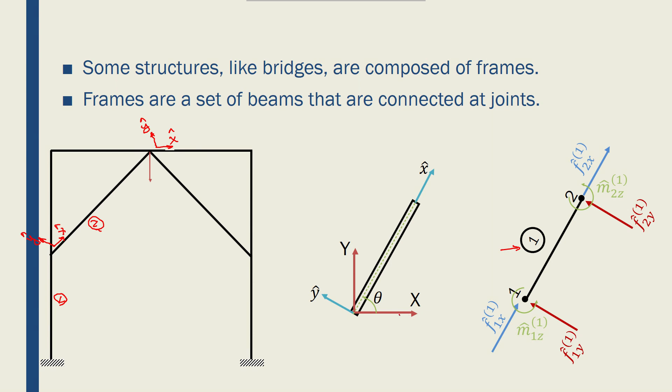Actually, the global coordinate system is common for all the elements but each one will have its own local coordinate system such as this one shown in blue with x hat and y hat, and one of the steps that we will need while studying the frames is to convert the stiffness matrices from the local coordinate system to global coordinate system.